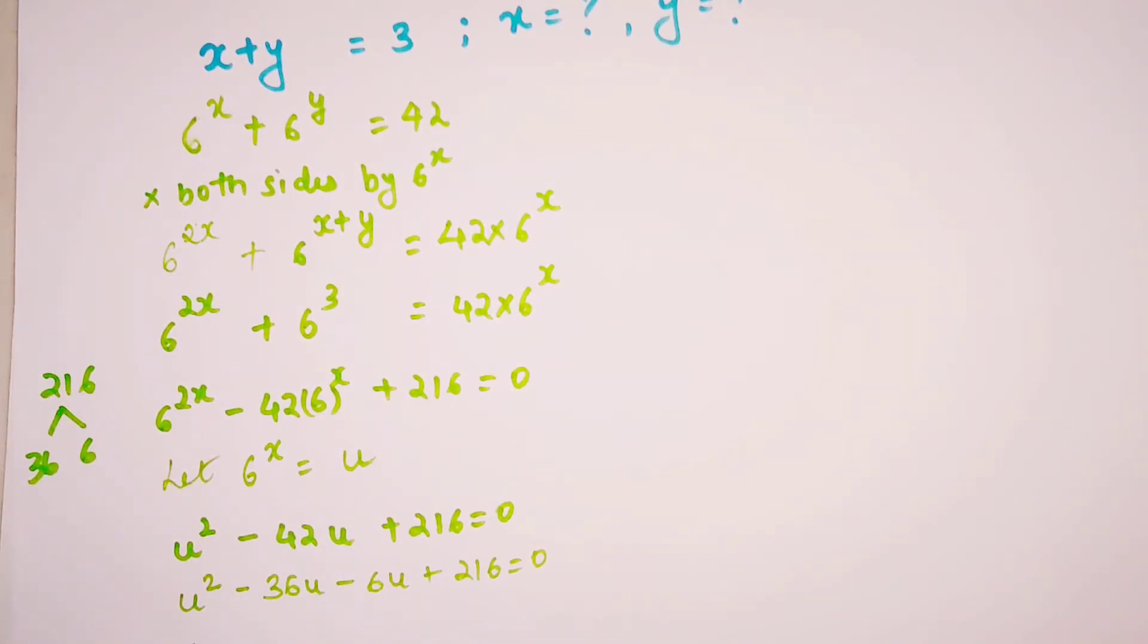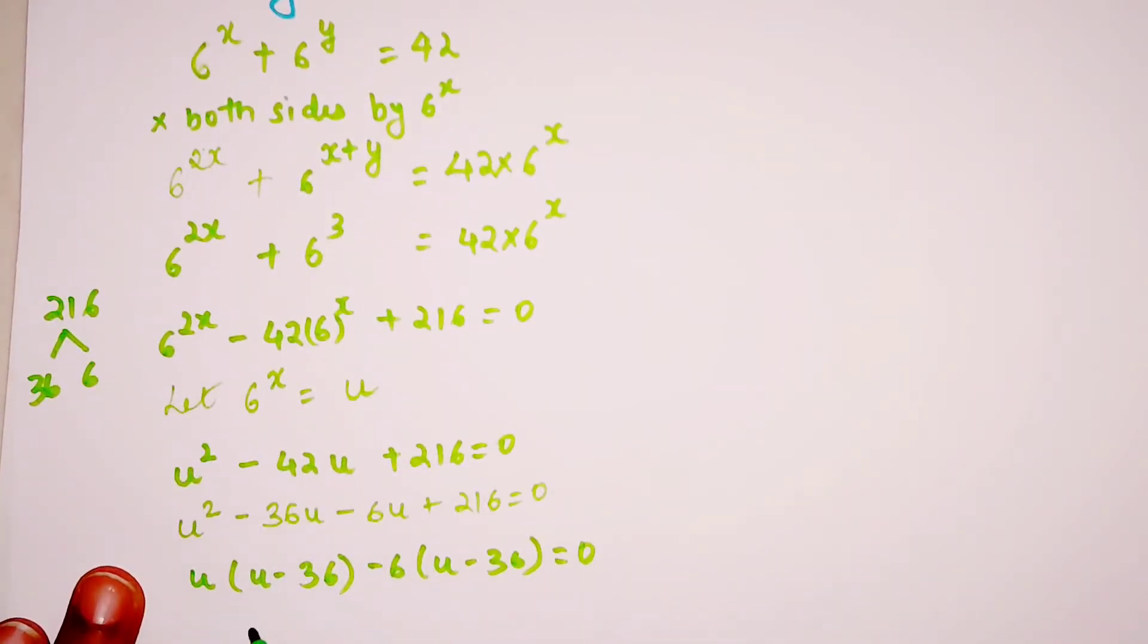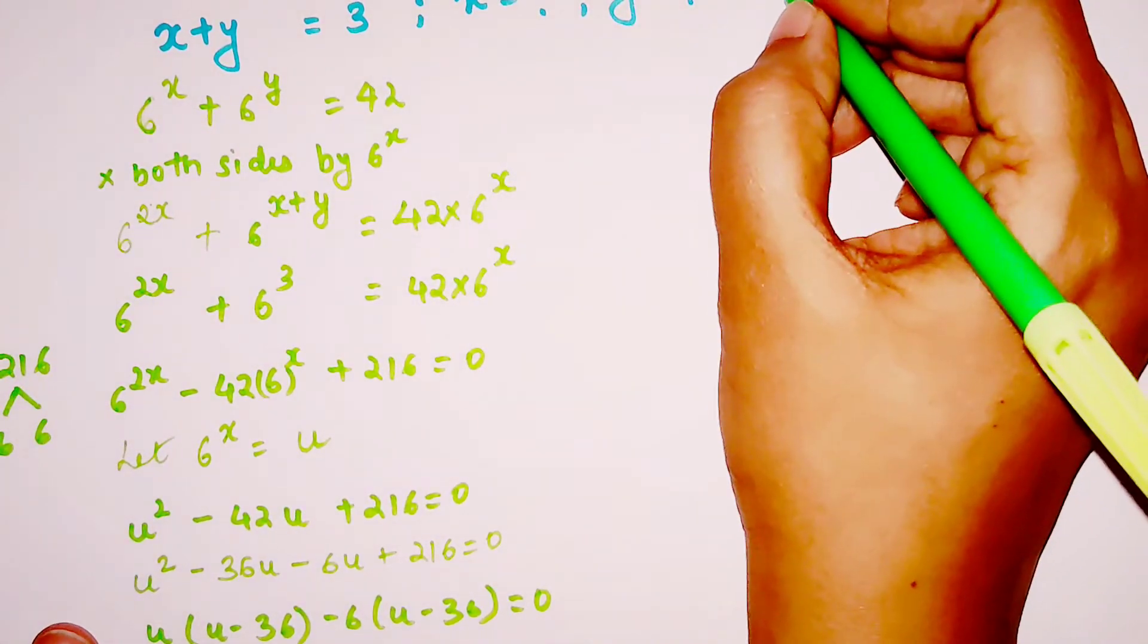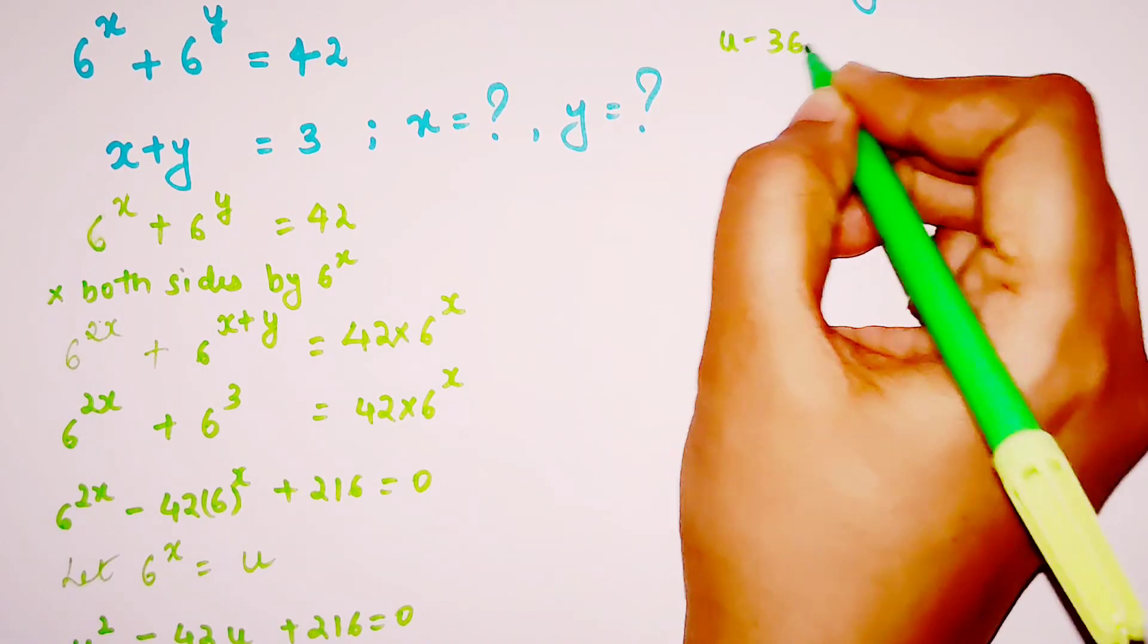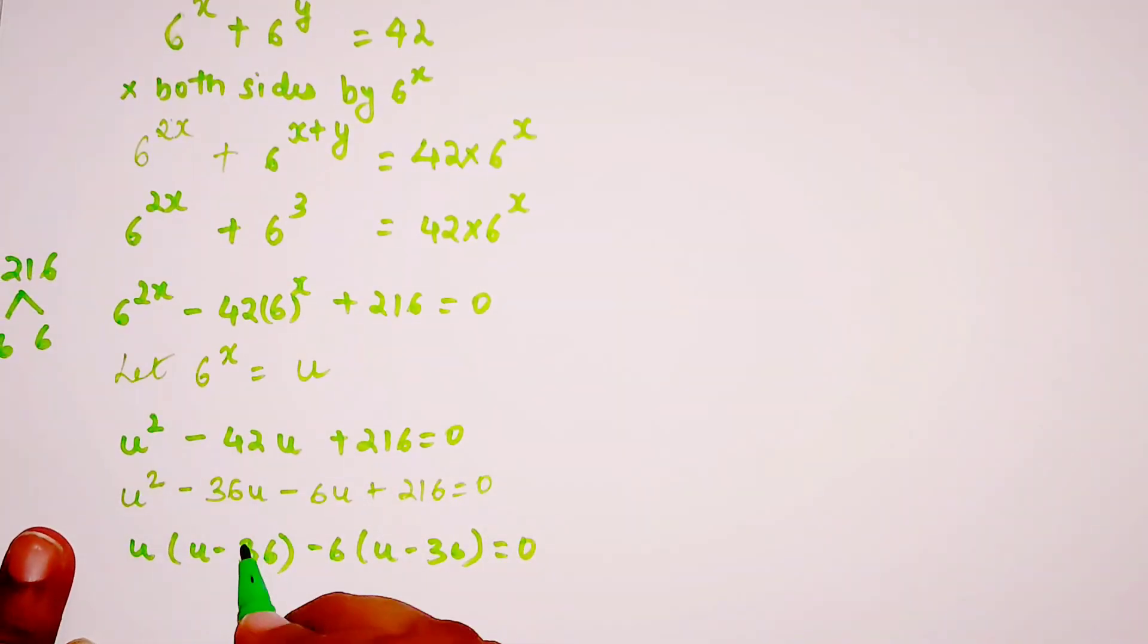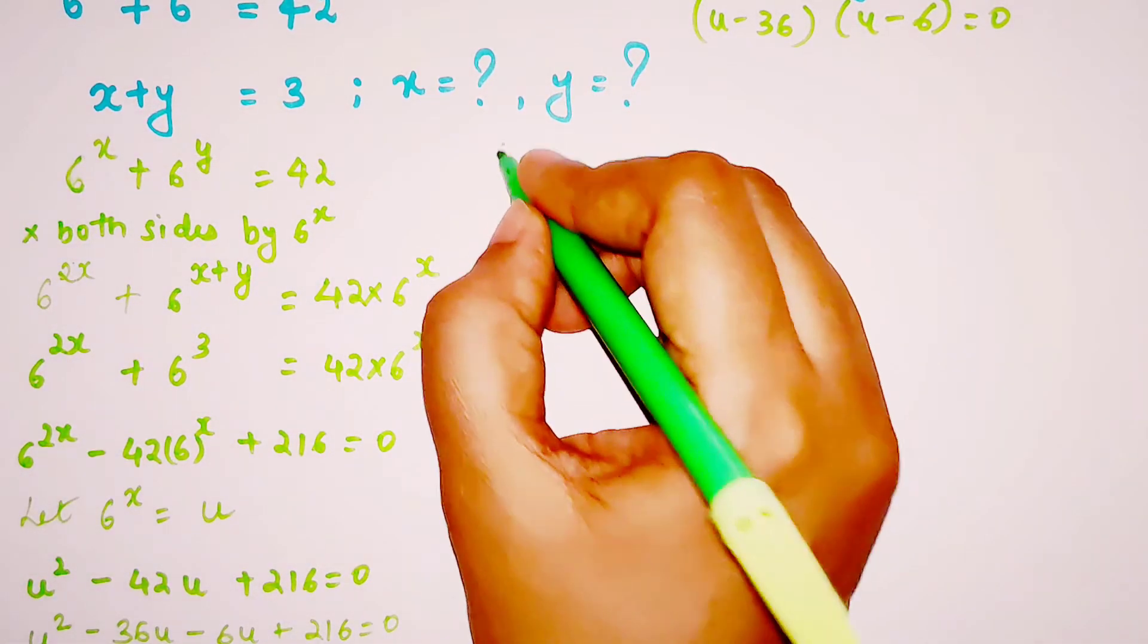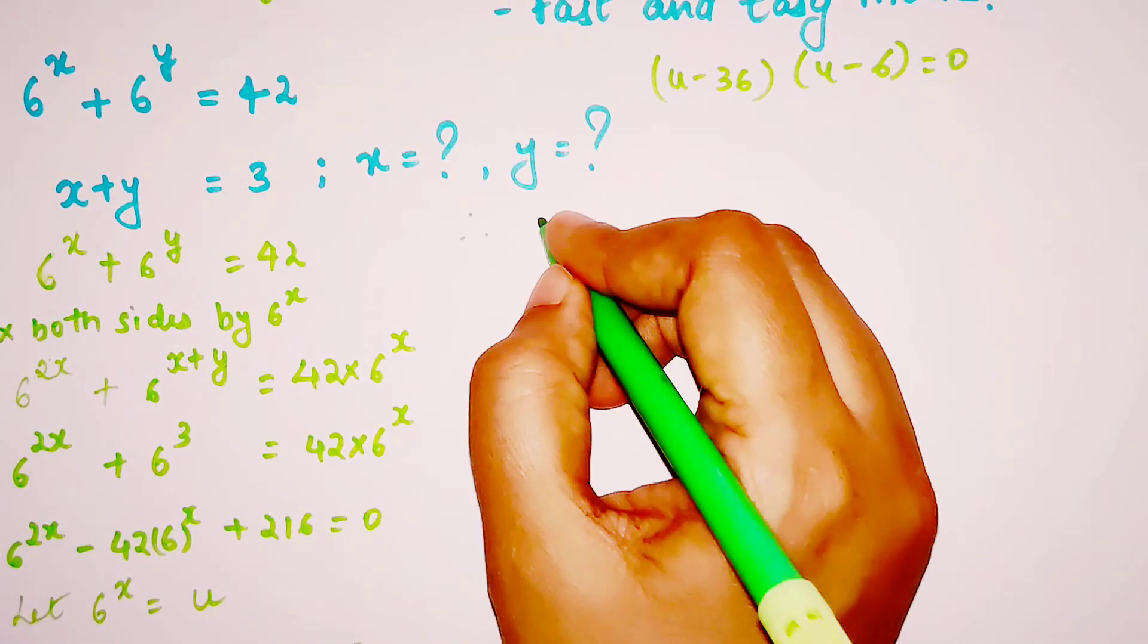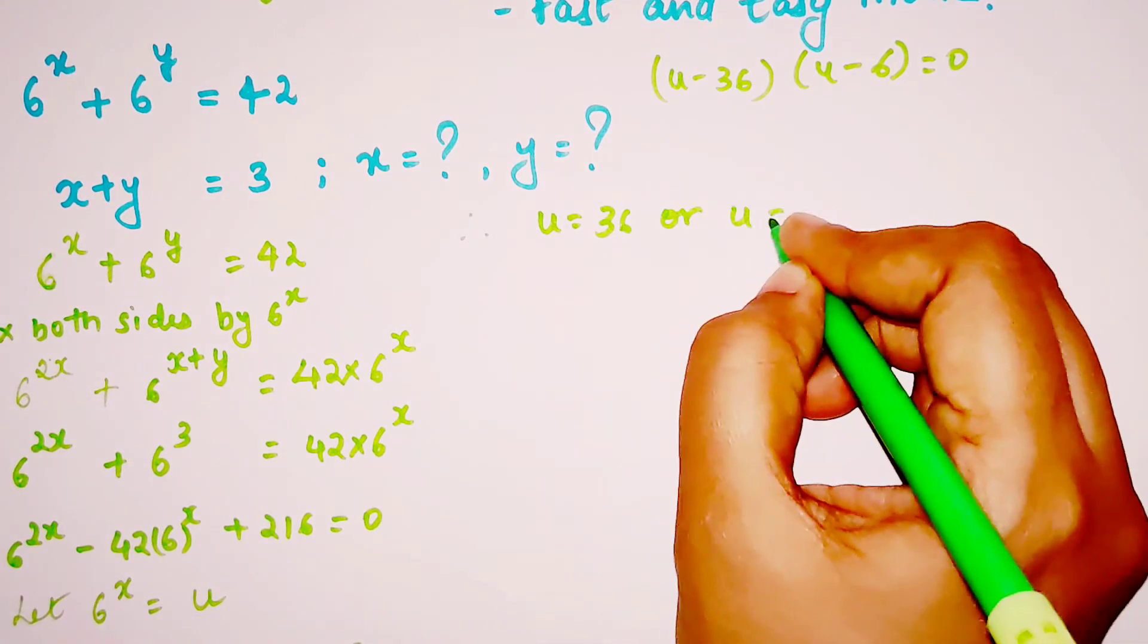Here you can take u common, so u(u - 36) - 6(u - 36). So we'll take (u - 36) common and we'll be left with (u - 6). Therefore (u - 36)(u - 6) = 0.